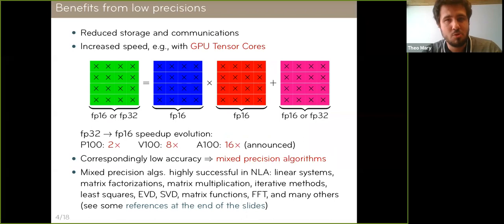There is a growing interest in exploiting these low precisions to get the benefits that they offer: reduced storage, data movement, communications, but also increased speed. Something I want to highlight is that the speed that we can expect from these low precisions is not always proportional to the number of bits. For example, going from fp32 to fp16, single to half precision, on these GPU tensor cores, we can expect a speed up much larger than 2x, something like 8x on the Volta architectures. It's even been announced to increase to 16x on the next generation.